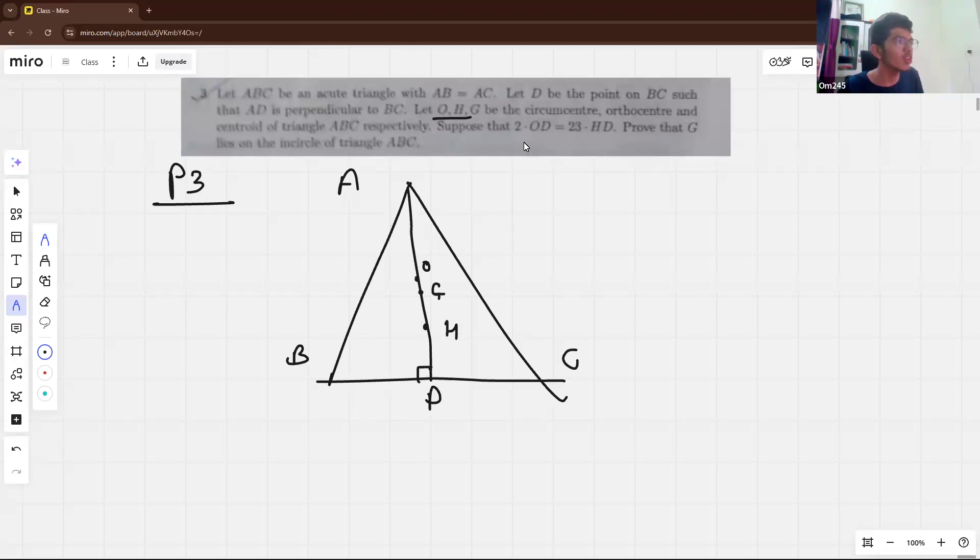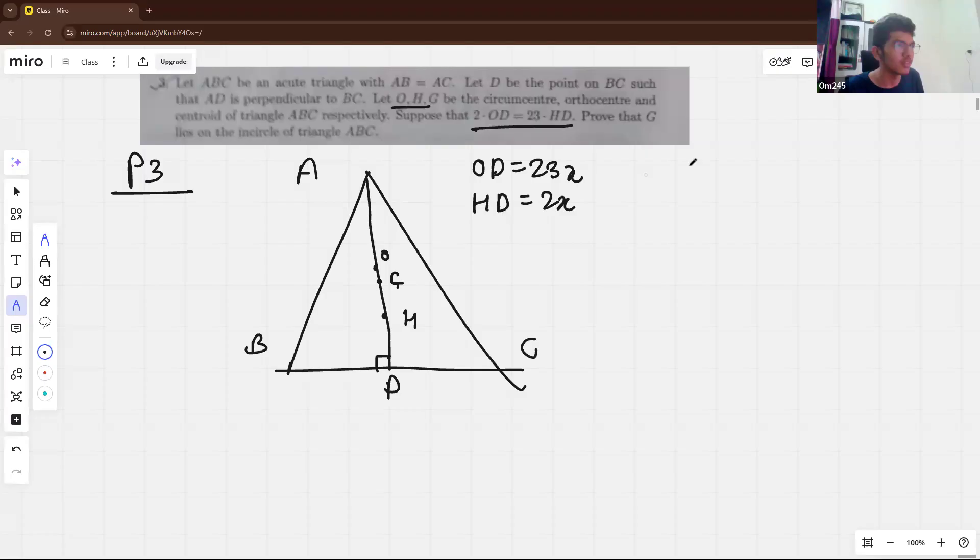Now because of this ratio, we will assume OD equal to 23X and HD equal to 2X. And because it's been known that AH is equal to two times of OD. This is like, you can just see like normal triangle. If you have H here and O here, then this is like two times of this length. So because of that, we get AH is actually equal to two times of OD, which is 26X.